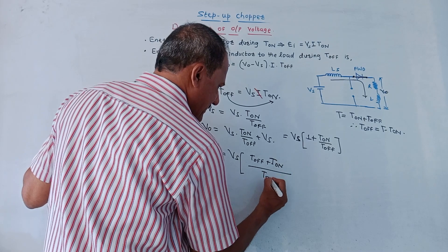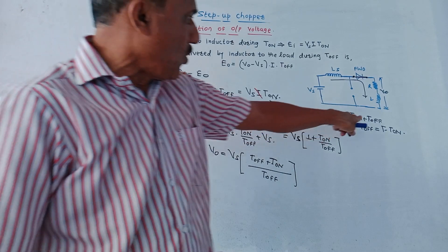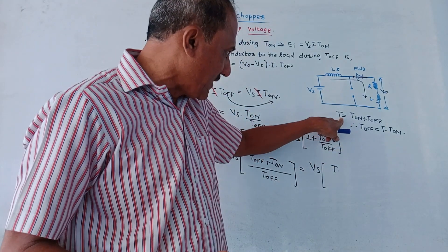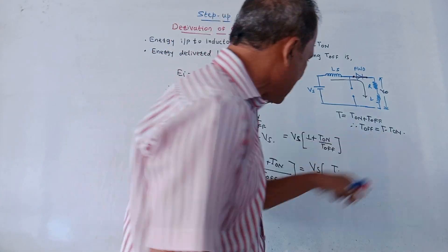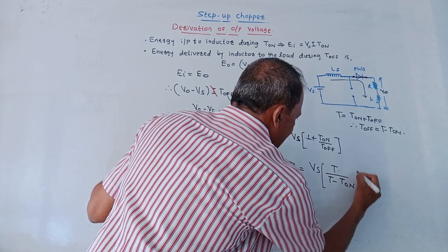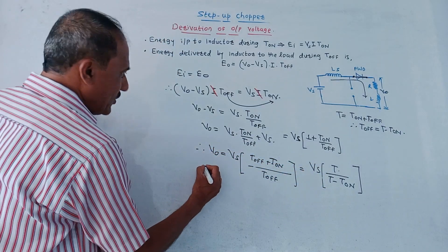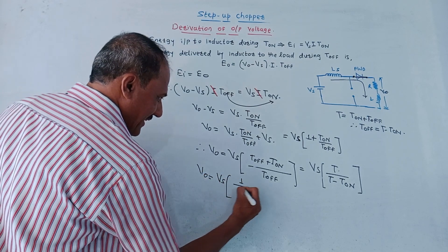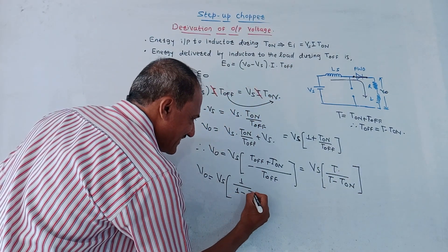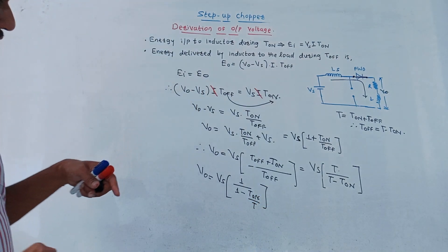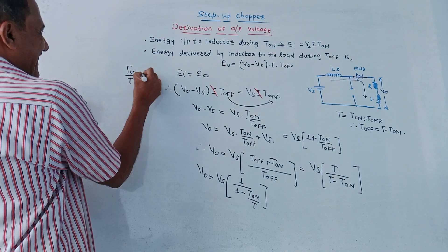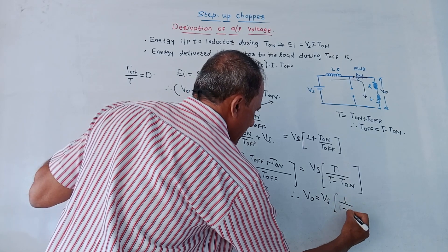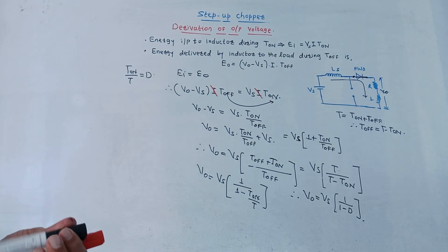Substituting T_off = T − T_on, we get V0 = Vs·(T_off + T_on)/T_off = Vs·T/T_off. Dividing numerator and denominator by T gives V0 = Vs/(T_off/T) = Vs/(1 − T_on/T). Since T_on/T is the duty cycle D, the final equation is V0 = Vs/(1 − D). This is the equation of output voltage of the step-up chopper.